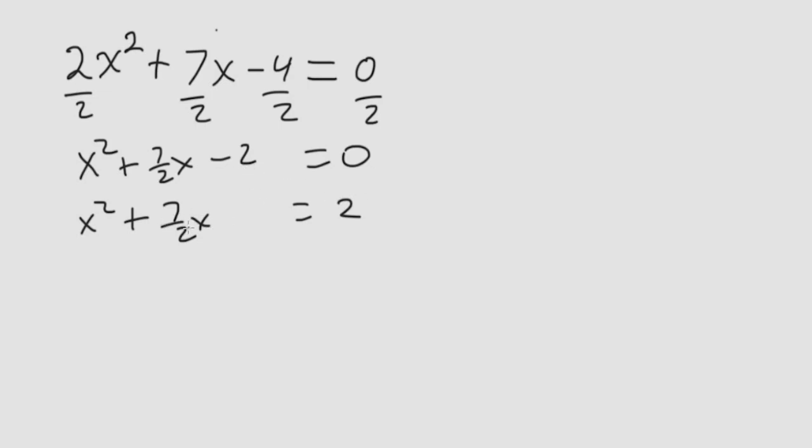So what I do here is I take the x term coefficient, I divide it by 2, and then I square it and add it to both sides. So we have 7 halves divided by 2, and this 2, same as 2 over 1. This is equal to 7 halves, and I flip the bottom here times 1 half. So we get 7 fourths.